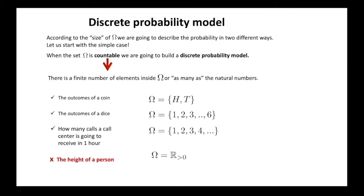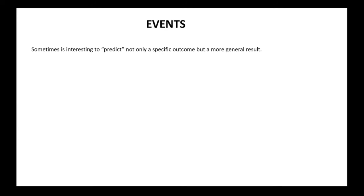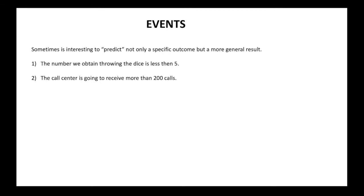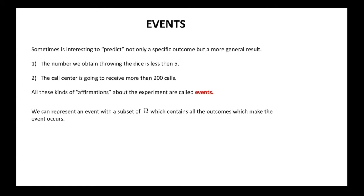However, if we represent the height of a person with a positive real number, the sample space is too big, because any real number interval contains more elements than the natural numbers. Notice that in real life, you are not always interested in guessing a specific outcome — sometimes you want to predict a more general result, like getting a number smaller than 5 with a dice, or the call center receiving more than 200 calls. All these kinds of affirmations are called events, and can be represented as a subset of omega containing all the outcomes that would make the event happen.